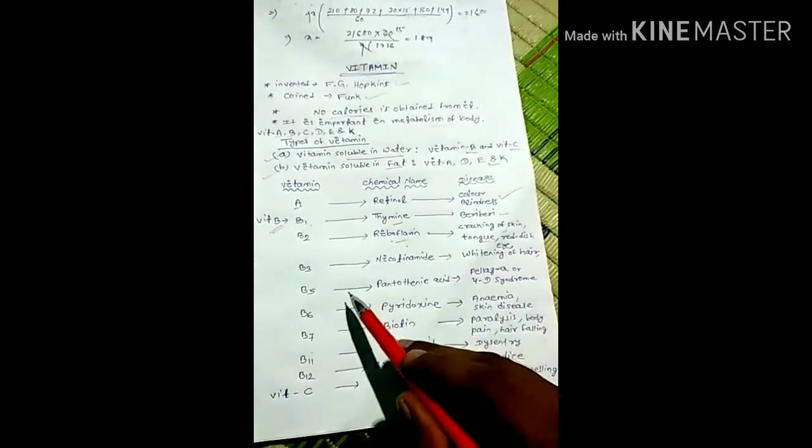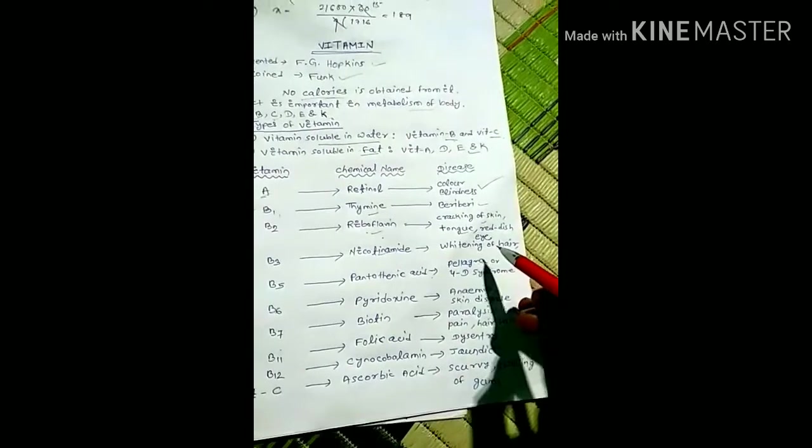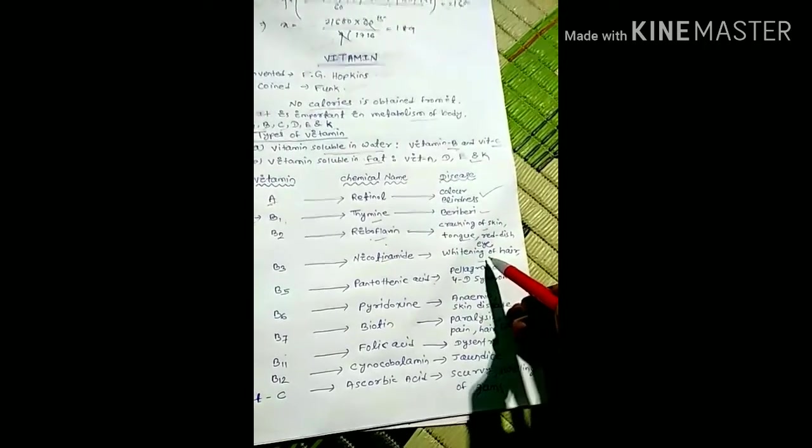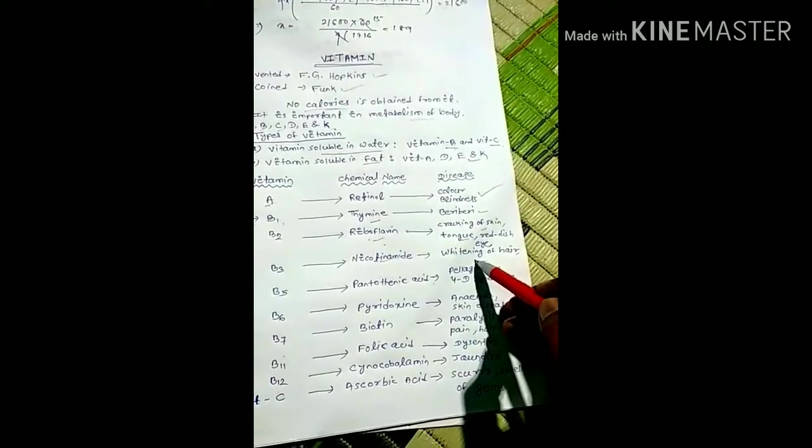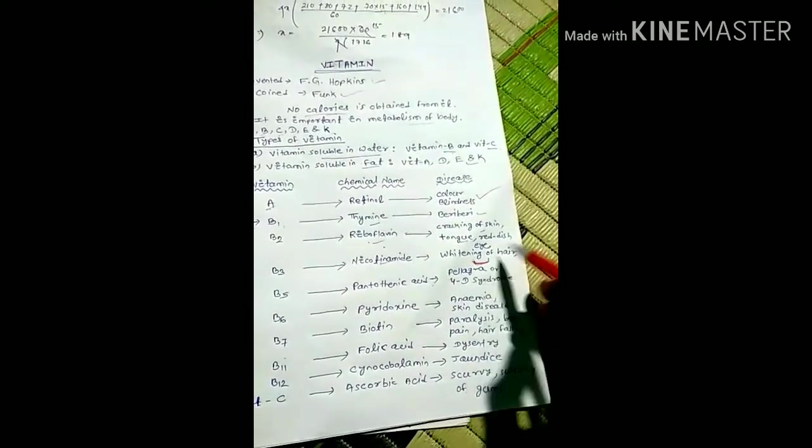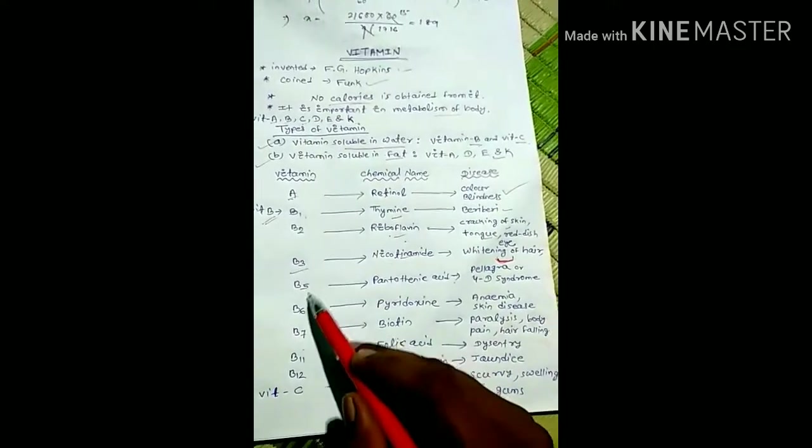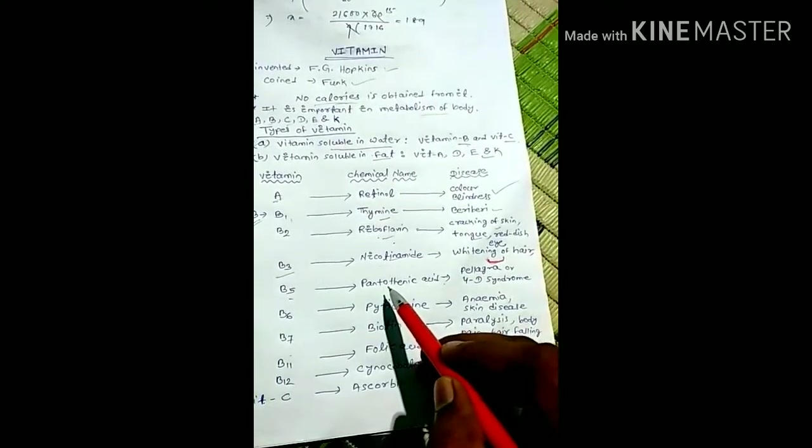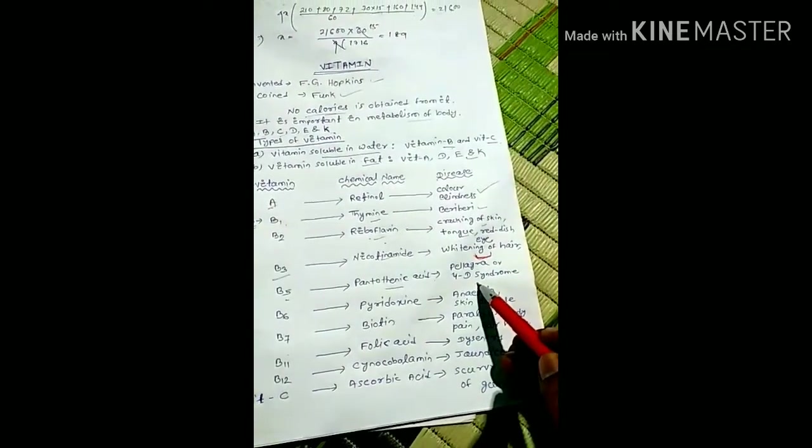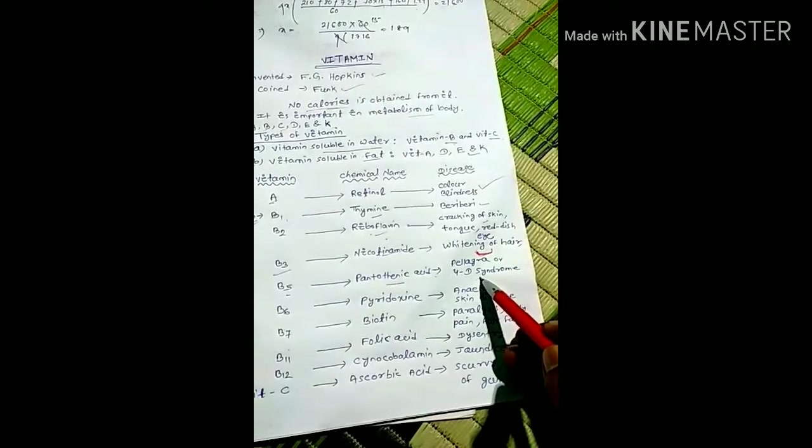Vitamin B3's chemical name is nicotinamide. Deficiency of nicotinamide creates whitening of hair, which is a major disease in today's life that most young people face. Vitamin B5 is known as pantothenic acid, and deficiency of this vitamin causes pellagra or 4D syndrome.